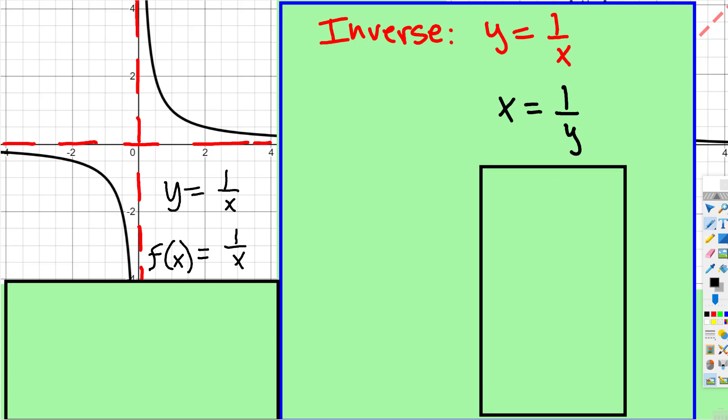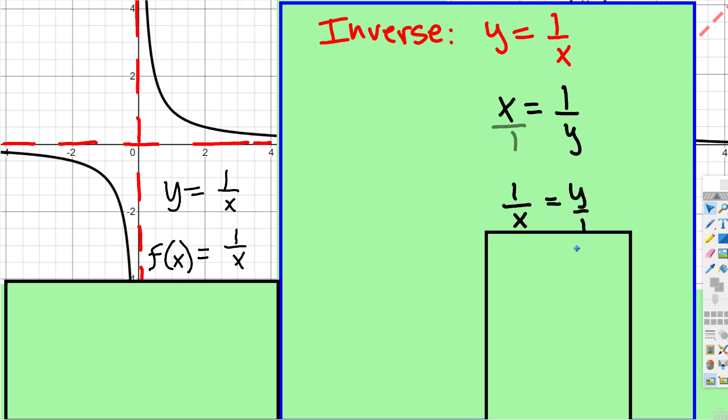Now, the y's in the denominator, if we put the invisible 1 underneath x, so then you have a fraction equal to a fraction, you can flip both sides, and then y over 1 is just y.